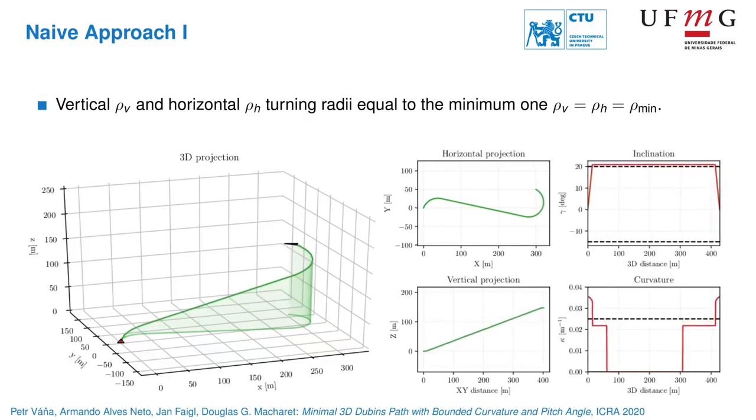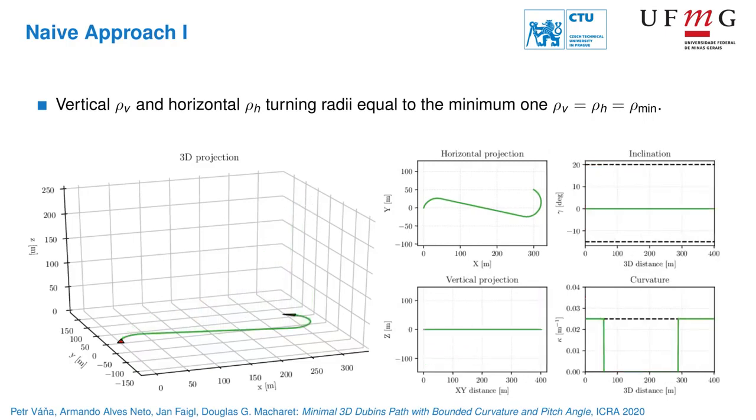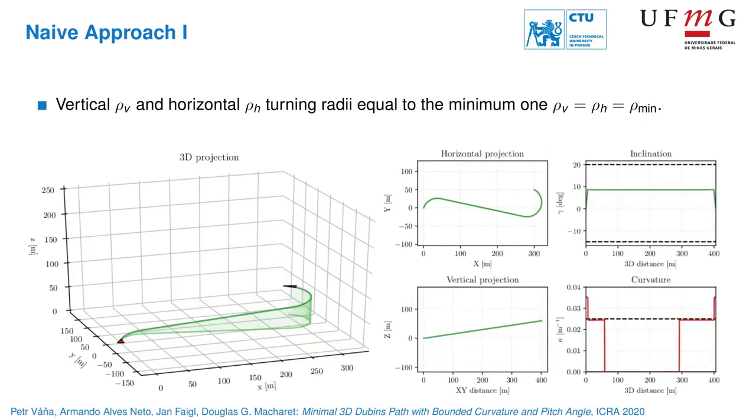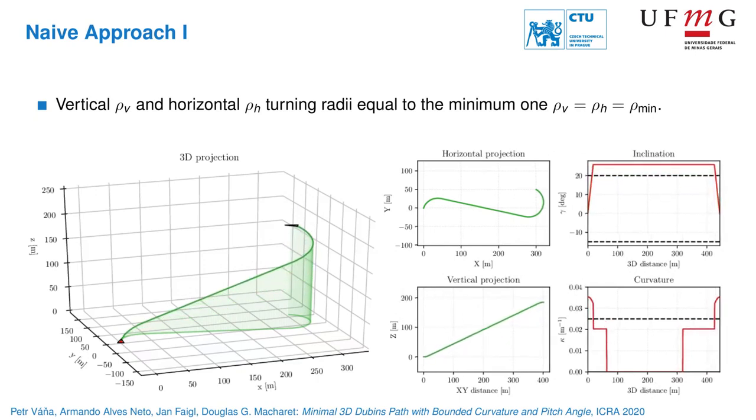The horizontal part is computed first as Dubins path in 2D. Further, the length of the horizontal part is used and the vertical profile is computed also as 2D Dubins path.